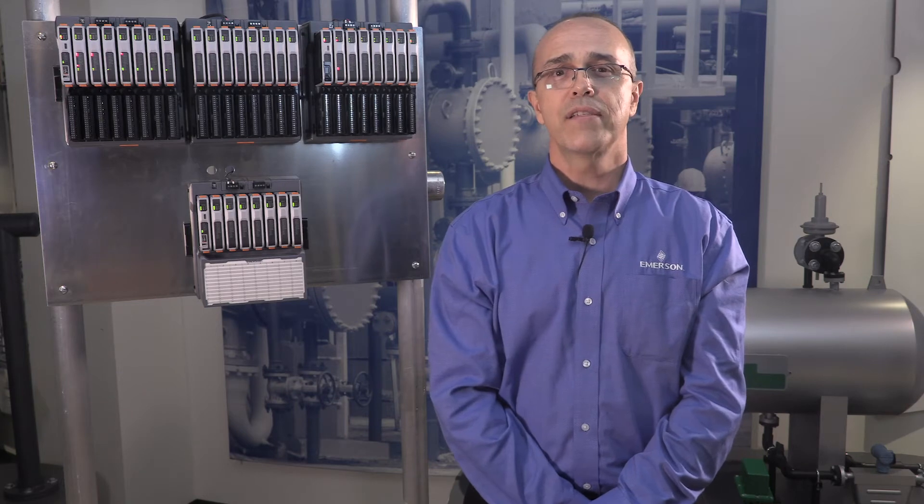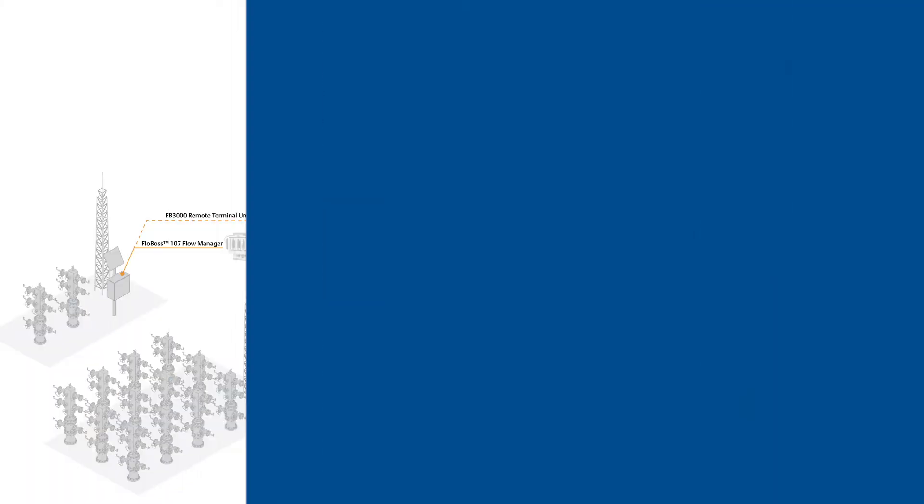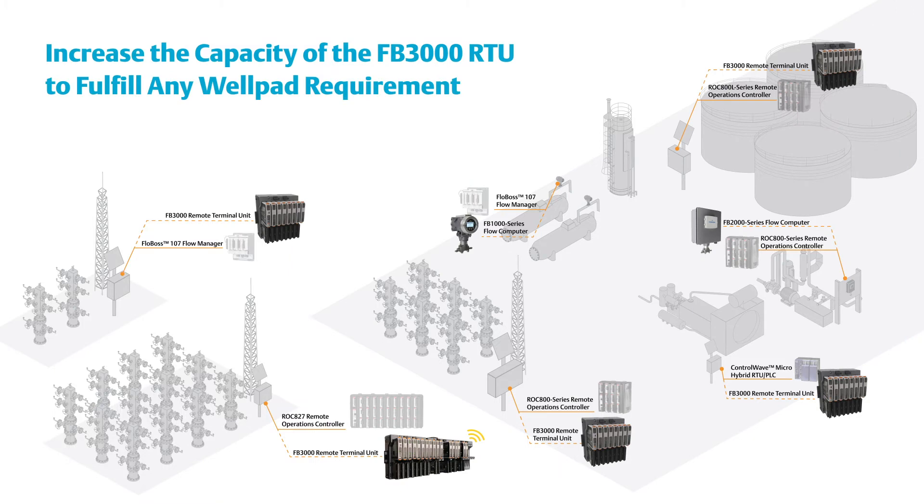Our next generation technology is designed to offer significantly more capability than any of our existing products. In fact, you can easily increase the capacity of our FB3000RTU to fulfill just about any well-pad requirement. It can scale from a few meter runs to hundreds of them, even if you need complex logic and control. This allows you to reduce your automation footprint and take a more efficient engineering approach.